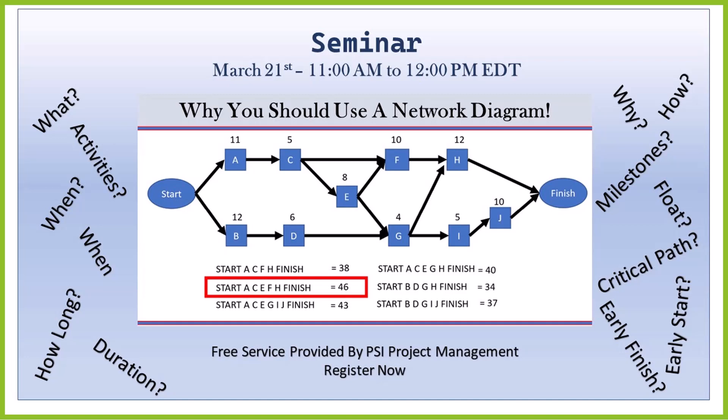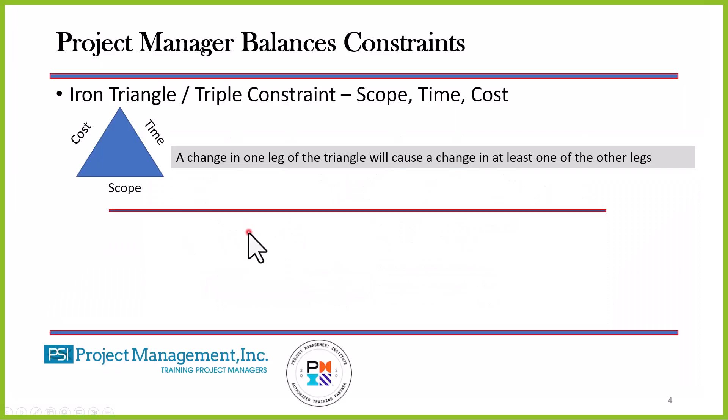Welcome to the seminar on why you should use a network diagram. There's more to a project manager's role than just network diagramming, and we often refer to the triple constraint. If you attended previous seminars, you know this is one of my favorite slides because the iron triangle, or the triple constraint, is made up of scope, time, and cost.